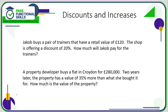Let's take a look now at discounts and increases. In the first question, Jakob buys a pair of trainers that has a retail value of £120 and the shop is offering a discount of 20%. So how much is he going to pay for the trainers? We need to calculate 20% of £120 and then take it off — that's how you do the discount.